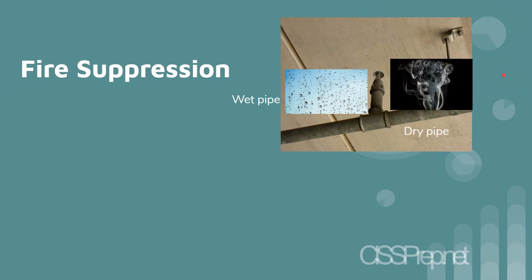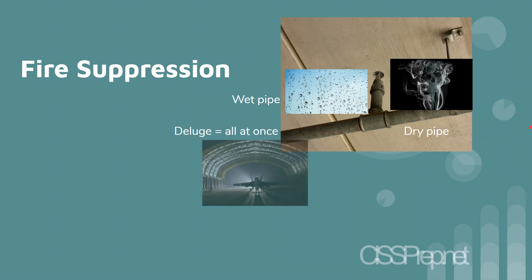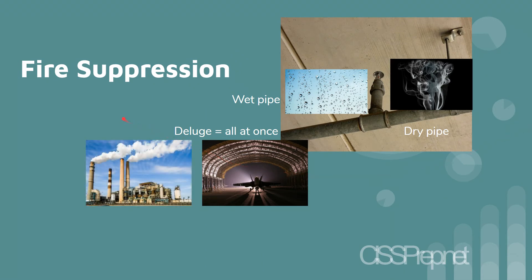Then you have dry pipes, which are prefilled with gas rather than water. With the wet pipe, you have heat sensors and the heads operate independently. Dry pipe is a little better, depending on your needs, because it's prefilled with gas. Then you have something called a deluge, where all the heads activate at once — these are good for things like hangars, parking lots, or large power plants. And then you have something called a preaction, which is a type of dry pipe where you have compressed air in the pipes, and once activated it becomes a wet pipe.